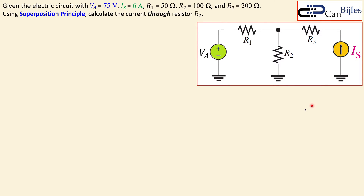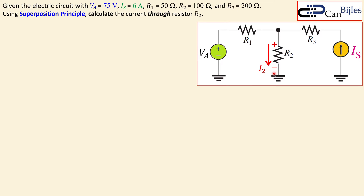In this case we have the following circuit given, and it is a little bit different than the first example. We have again three resistors and one DC voltage source. In addition, we have one DC current source. The values are 75 volts for Va, Is is six amps, and we have R1, R2, and R3. We'd like to use the superposition principle to calculate the current through R2 — the orientation is given from positive to negative, top to bottom.